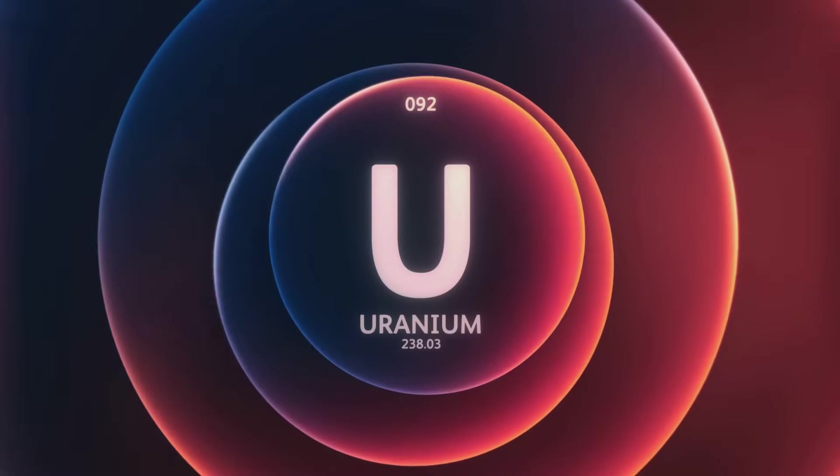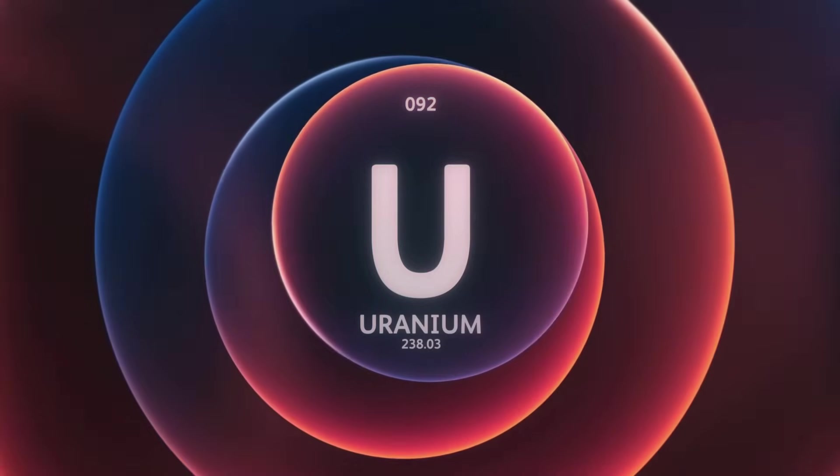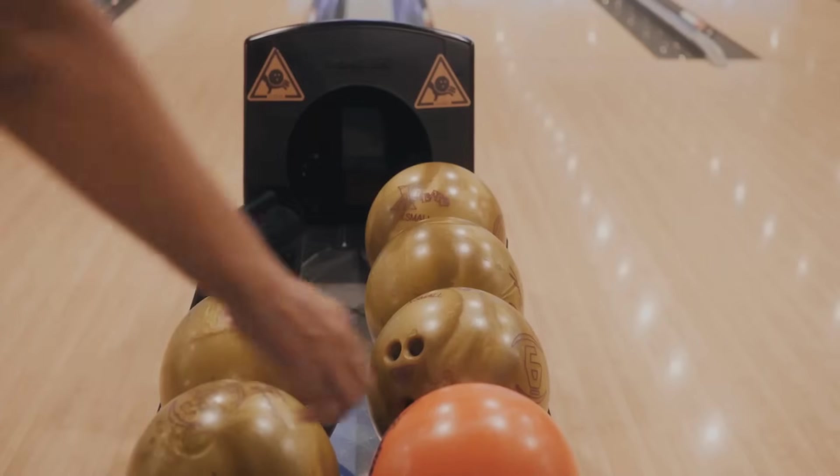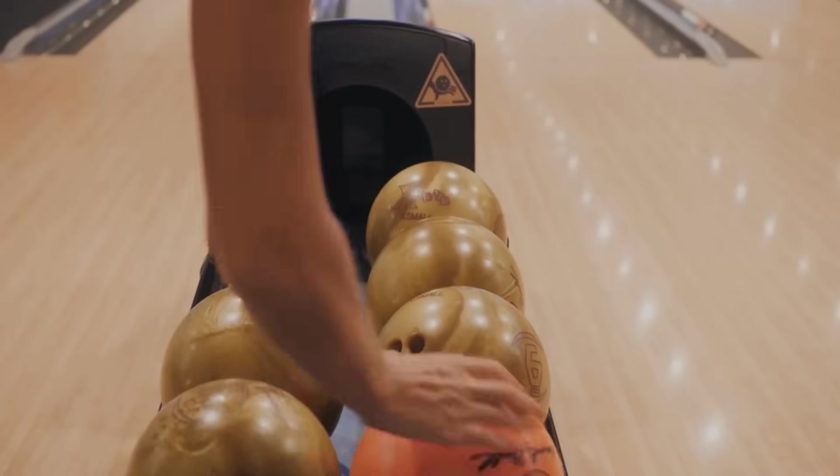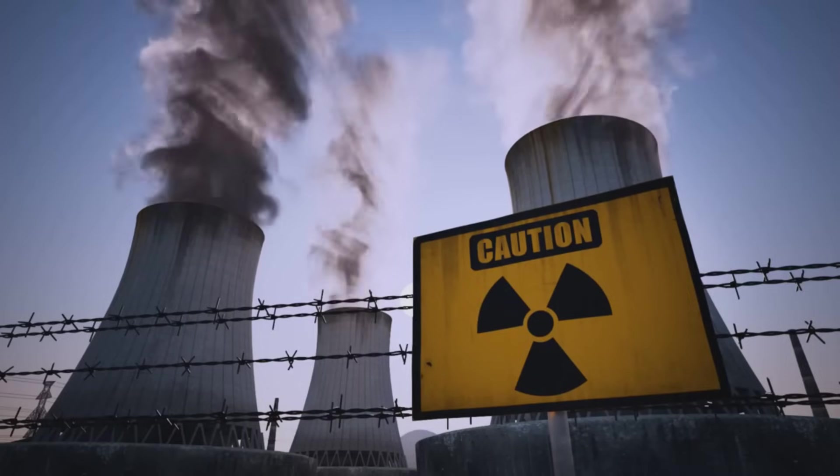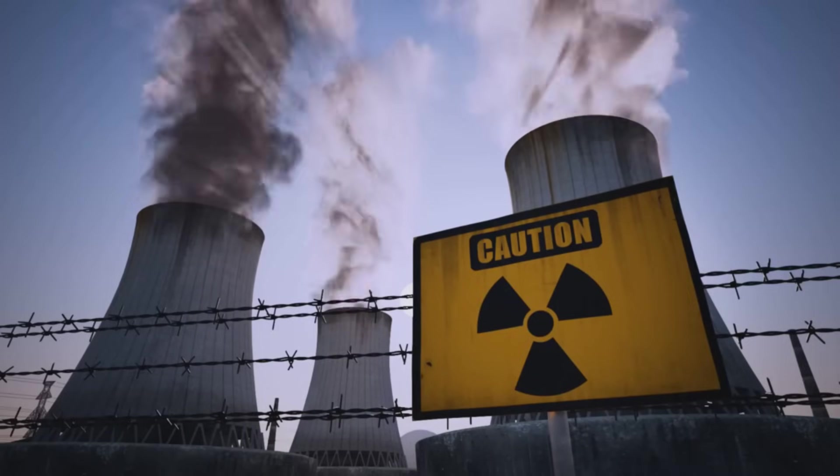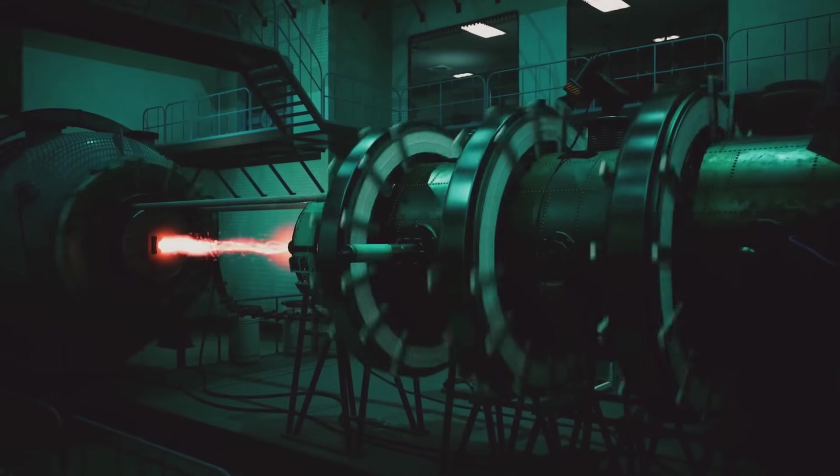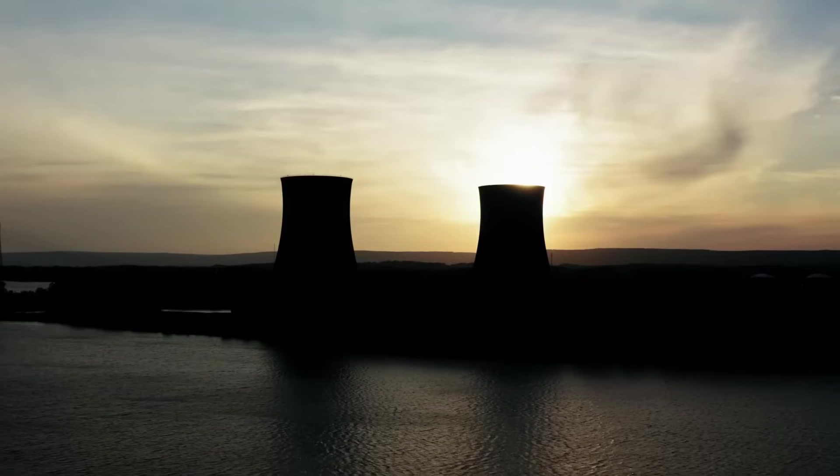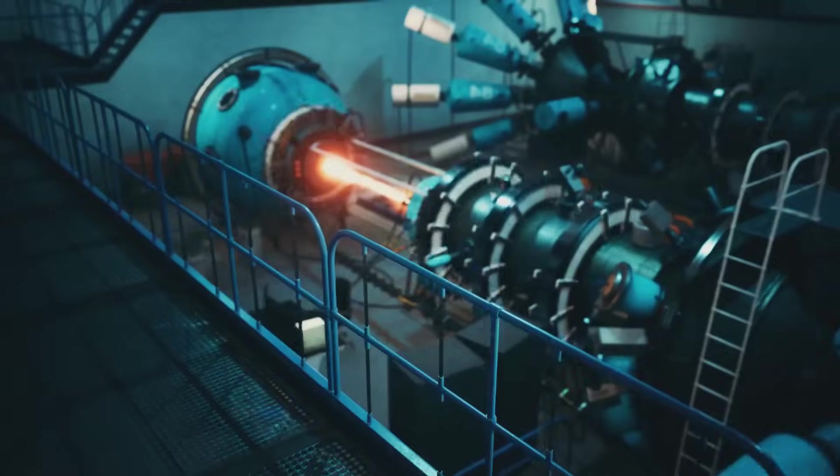For fission, we care about uranium, a heavyweight atom with 92 protons. Uranium's nucleus is huge and unstable, like trying to hold too many bowling balls at once. This instability makes uranium radioactive. It can fall apart or shoot out particles to become more stable. That's why uranium is perfect for fission - it's just waiting for a nudge to split. When it does, it releases energy and particles. This is the key to unlocking nuclear power.